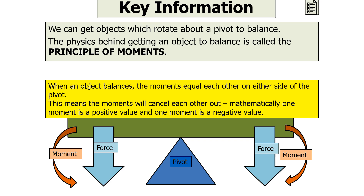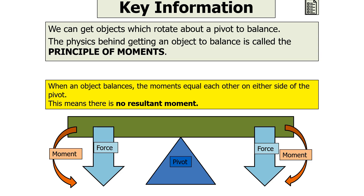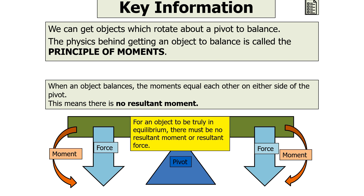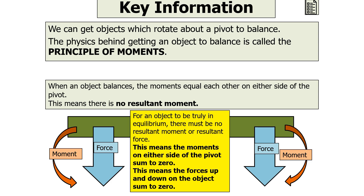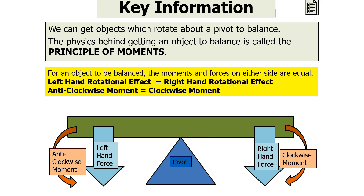Mathematically, one moment is a positive value and one moment is a negative value, meaning overall there is no resultant moment. When an object is balanced, we say it is in equilibrium. For an object to be truly in equilibrium, there must be no resultant moment and no resultant force. This means the moments on either side of the pivot sum to zero, and the forces up and down on the object also sum to zero. We can say the anticlockwise moment equals the clockwise moment.